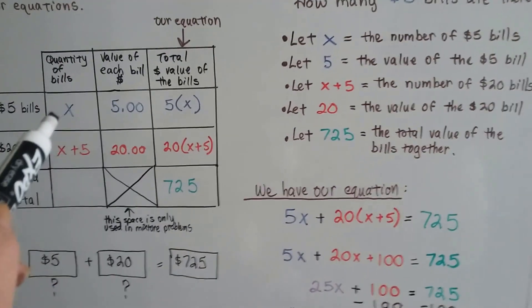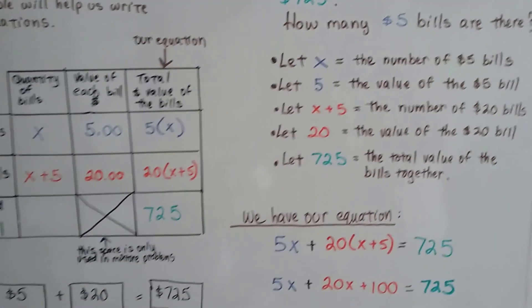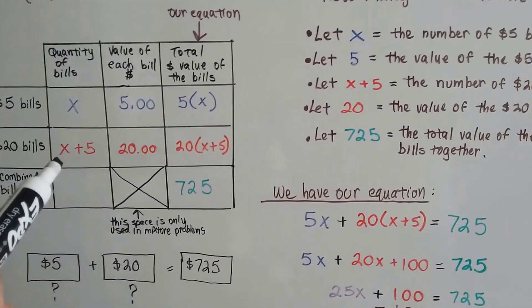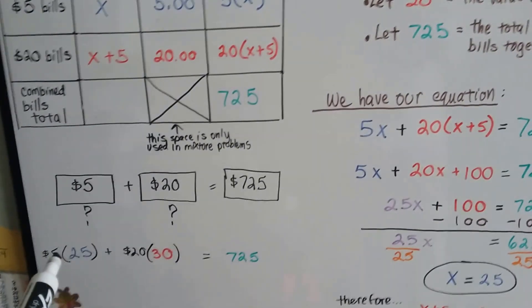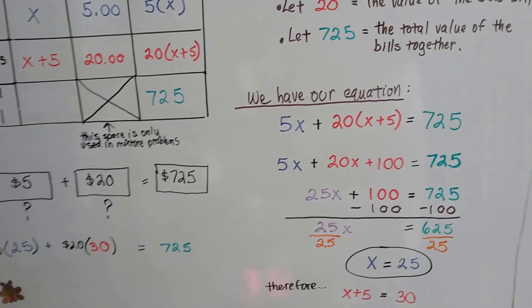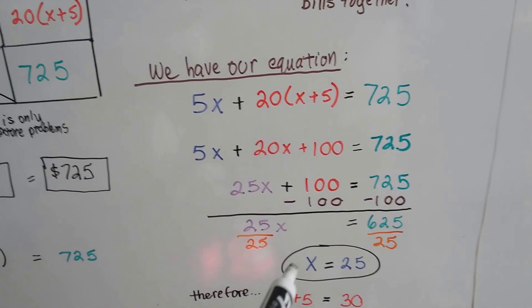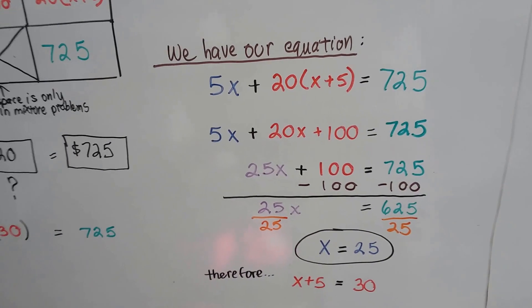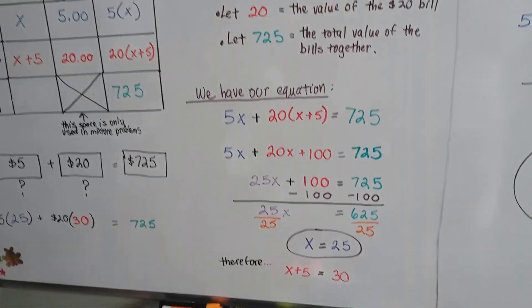If there's 25 $5 bills, that's all we needed to find out. That's our final answer. But we could go further. If there's 25 $5 bills, then we know how many 20s there are because we get 25 plus 5. That means there's 25 $5 bills and 30 $20 bills. And when we add them together, they'll be $725. But remember, the original question was how many $5 bills. You want to make sure you're answering what they're asking for. X equals 25.